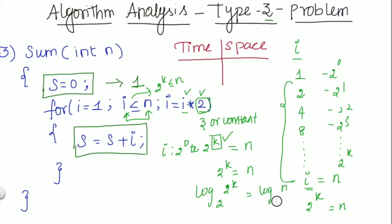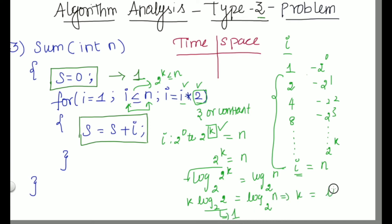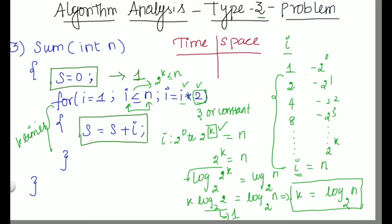Applying log base 2: log(2 power k) base 2 equals log(n) base 2. Bringing k down: k times log(2) base 2 equals log(n) base 2. Since log(2) base 2 equals 1, we get k equals log(n) base 2. So this loop will run k times and the time unit for this statement is log(n) base 2.